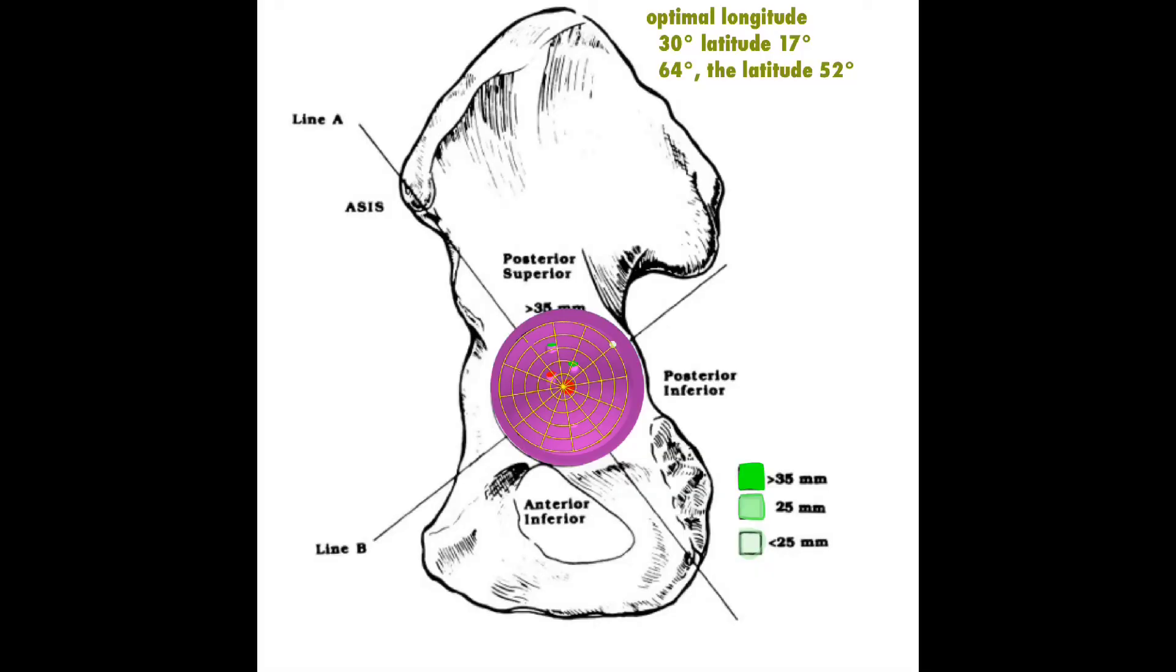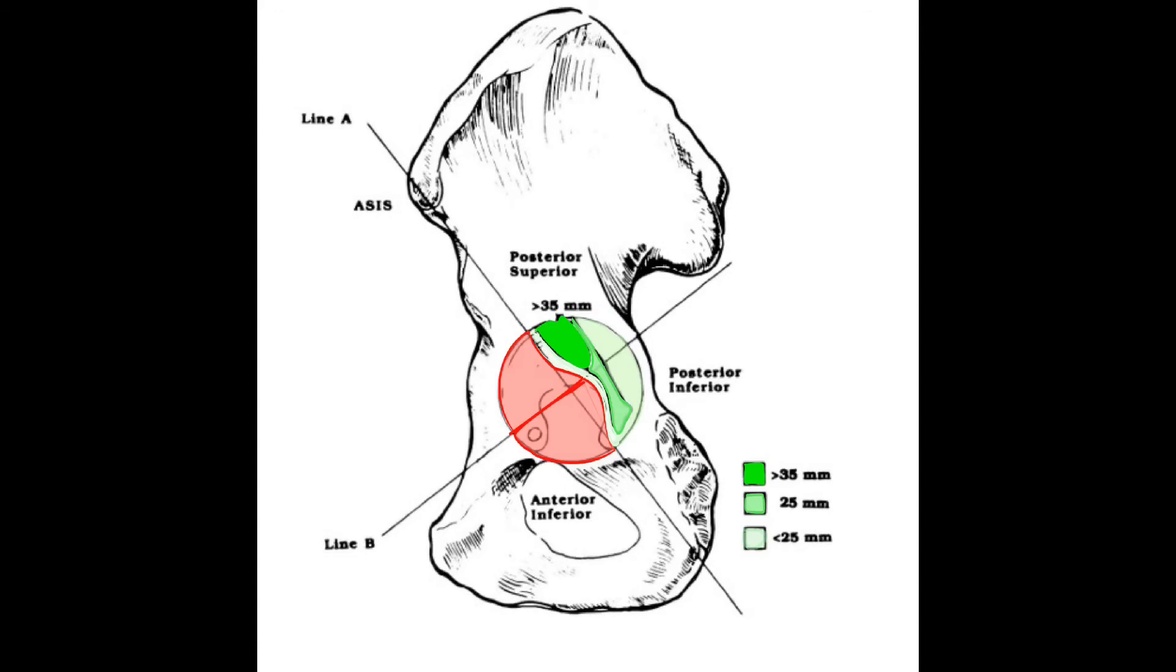The optimal locations for two screw holes are at 30 degrees and 64 degrees of latitude, with a separation angle of 35 degrees between them.